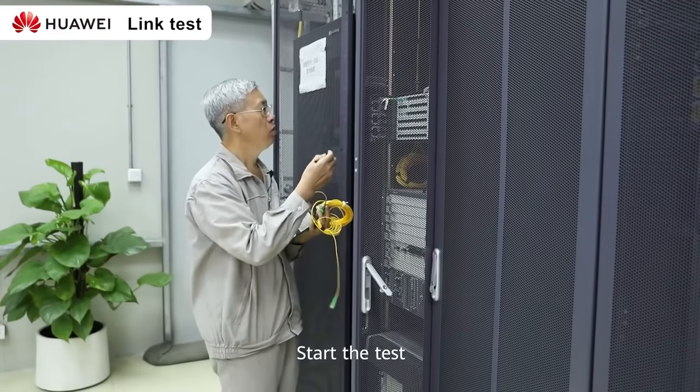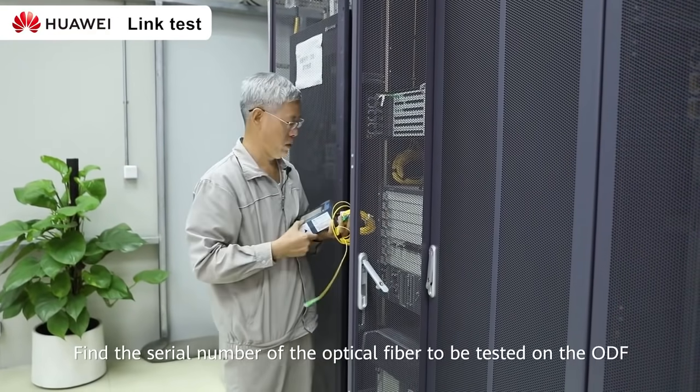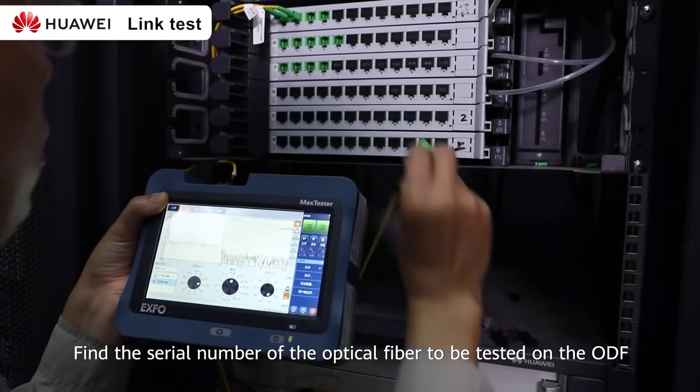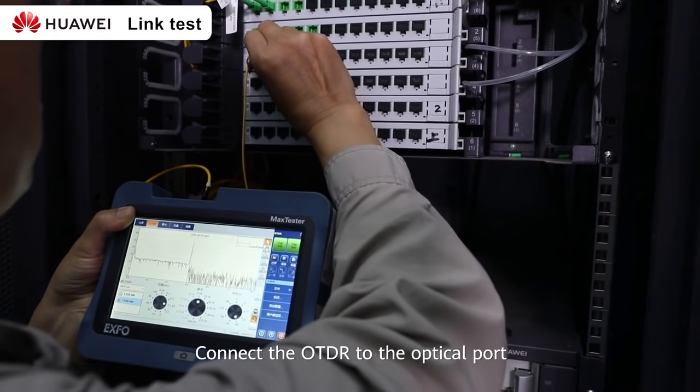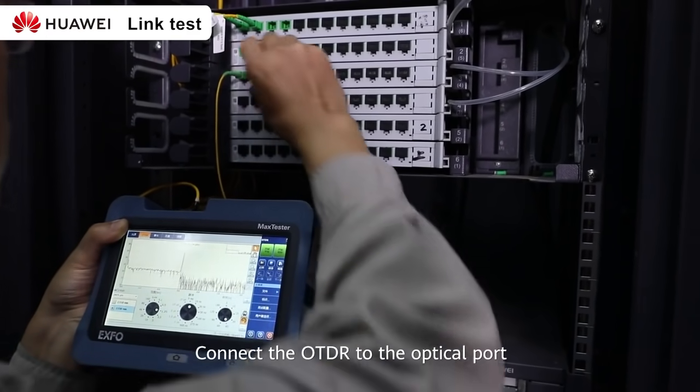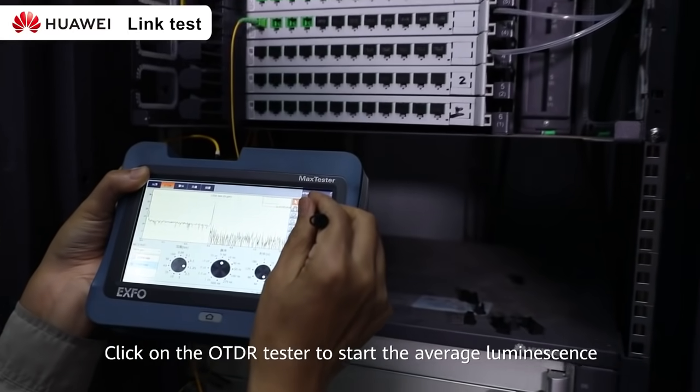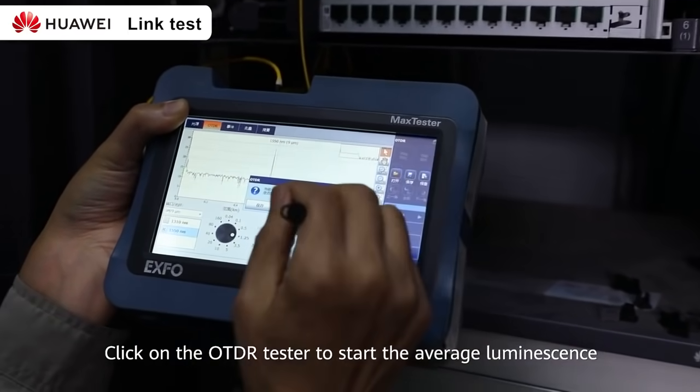Start the test. Find the serial number of the optical fiber to be tested on the ODF. Connect the OTDR to the optical port. Click on the OTDR tester to start the average luminescence.